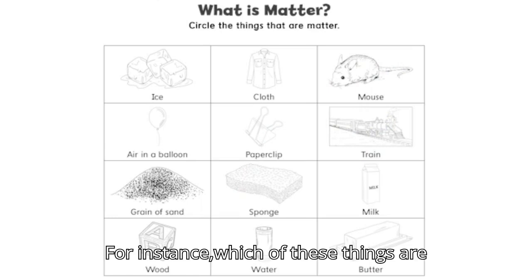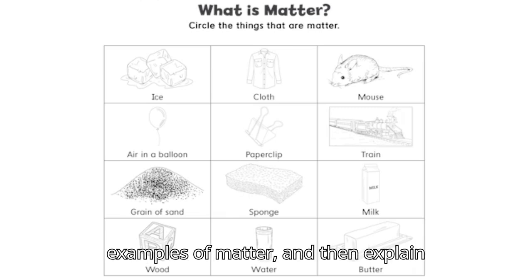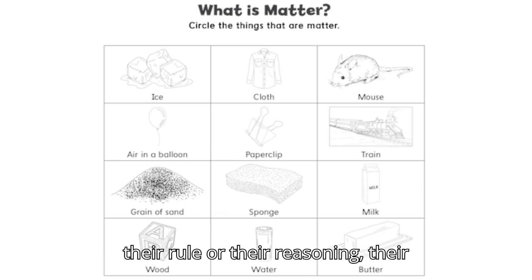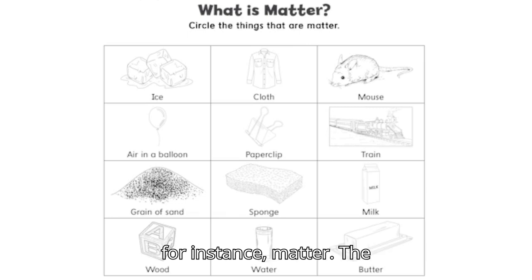For instance, which of these things are examples of matter, which ones are not examples of matter, and then explain their rule or their reasoning. They're thinking about how they decided whether something is an example of the concept, for instance, matter.